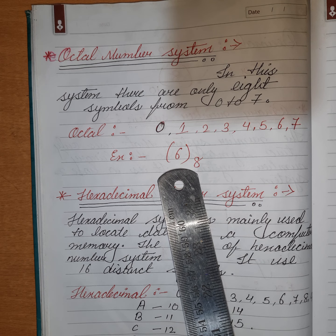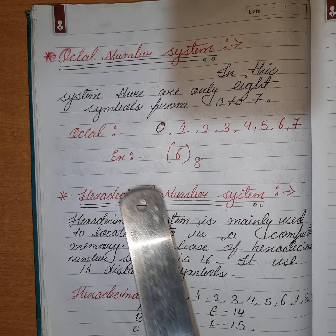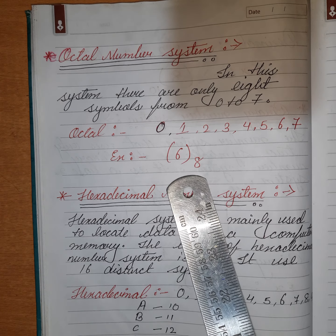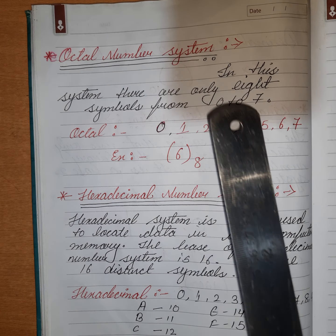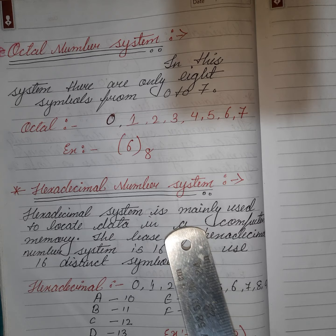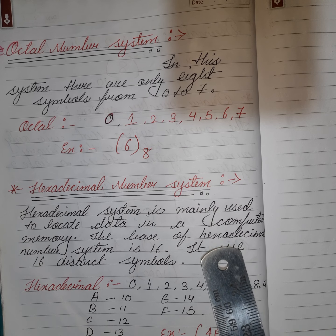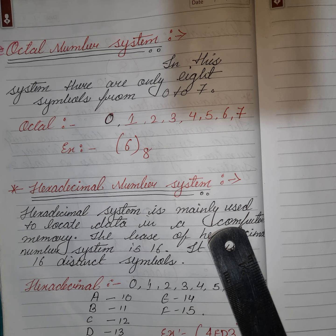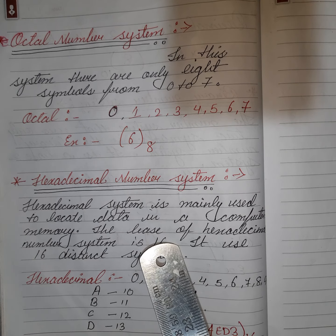The fourth type is the hexadecimal number system. What is a hexadecimal number system? It is mainly used to locate data in computer memory. The base of the hexadecimal number system is 16. It uses 16 distinct symbols.